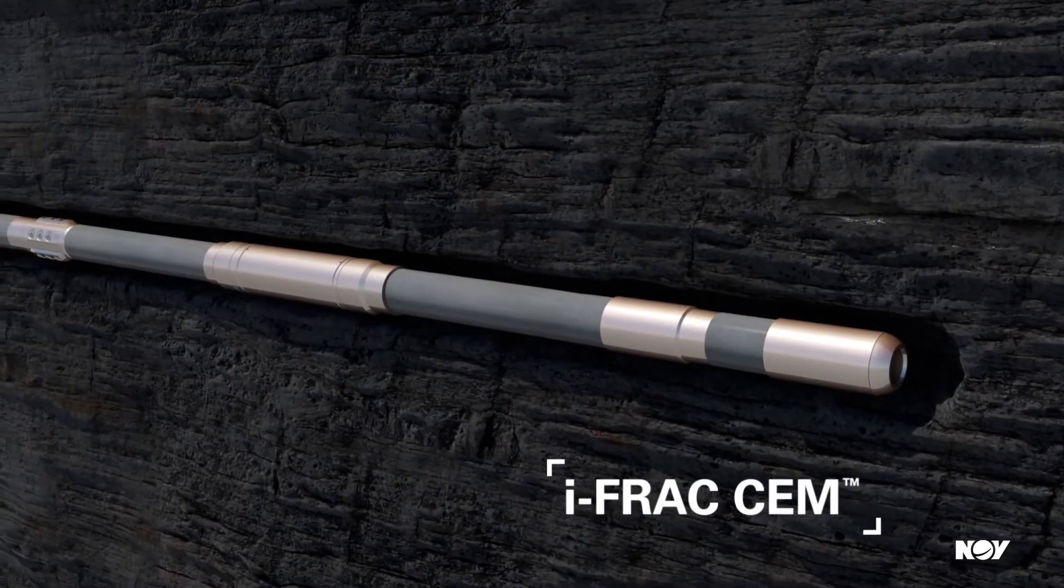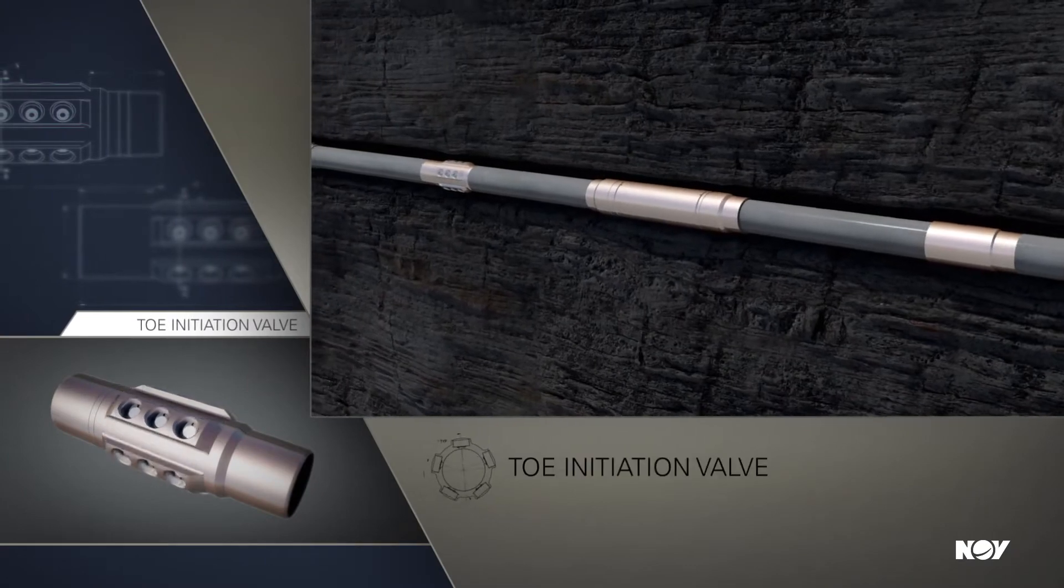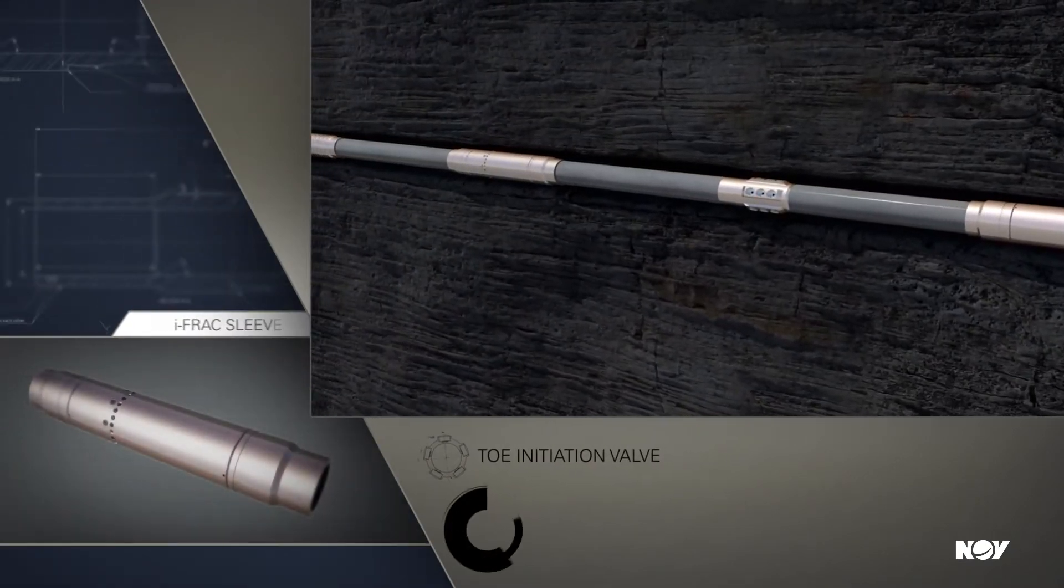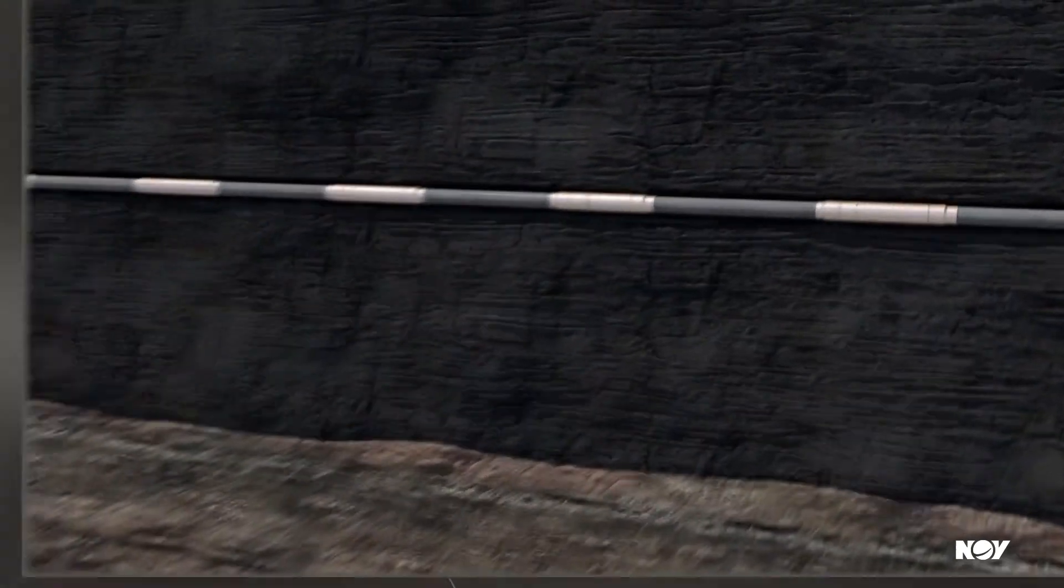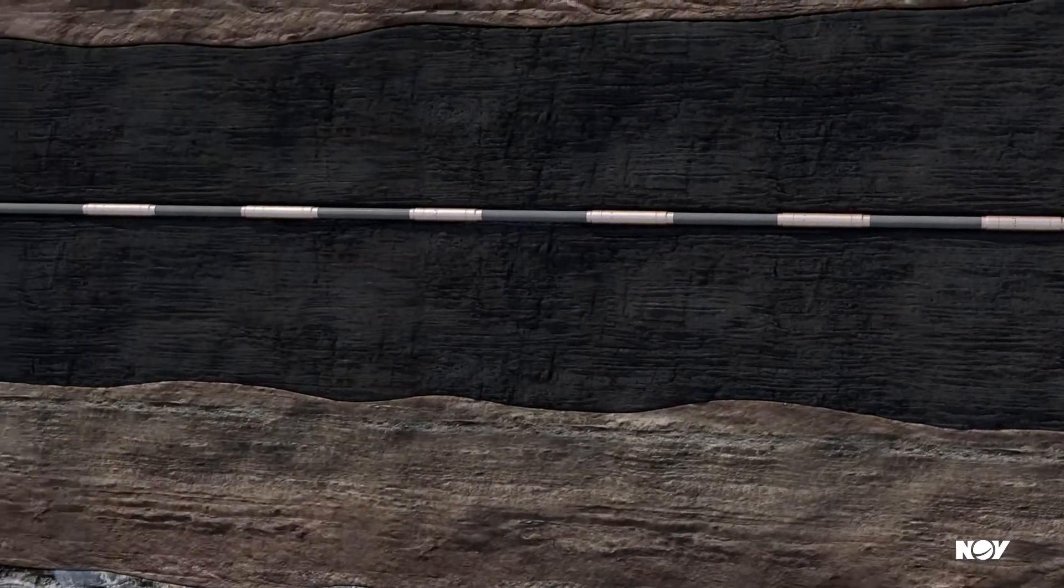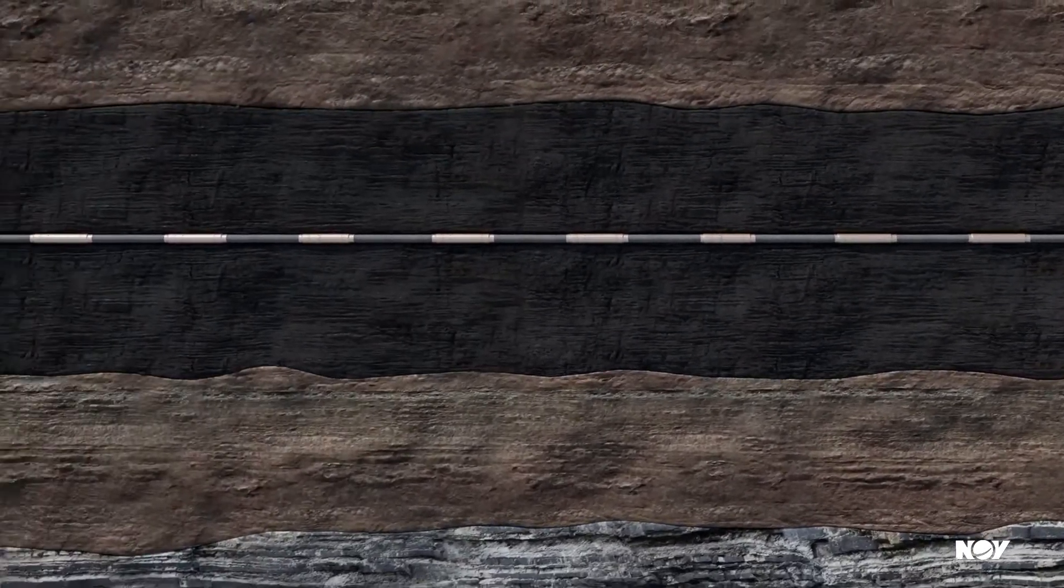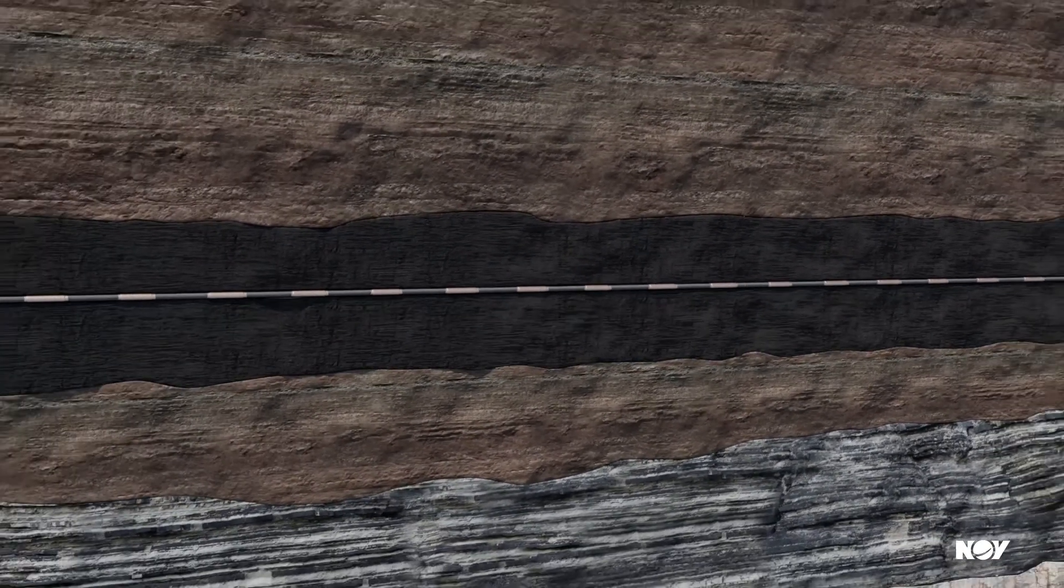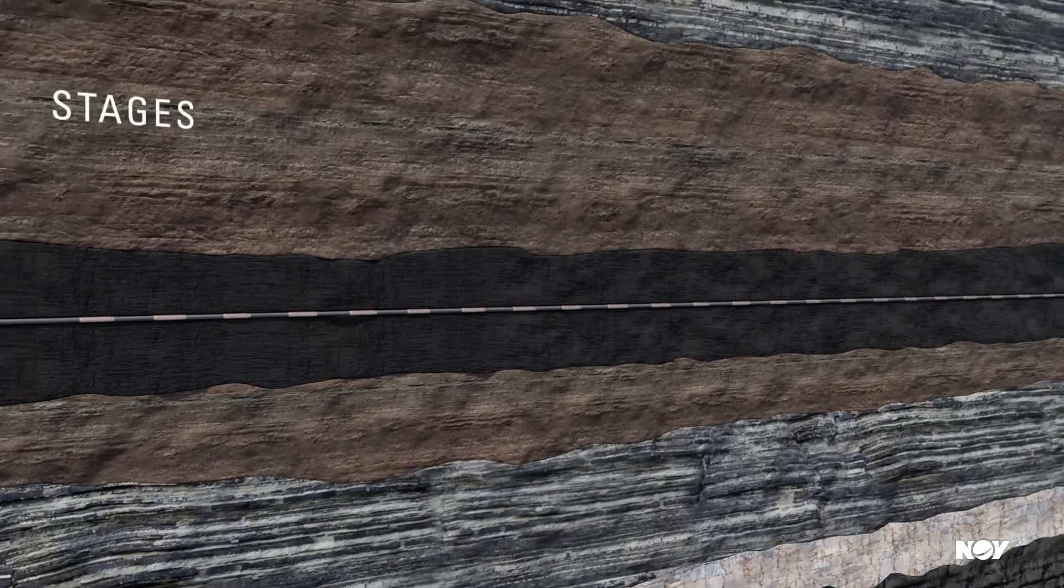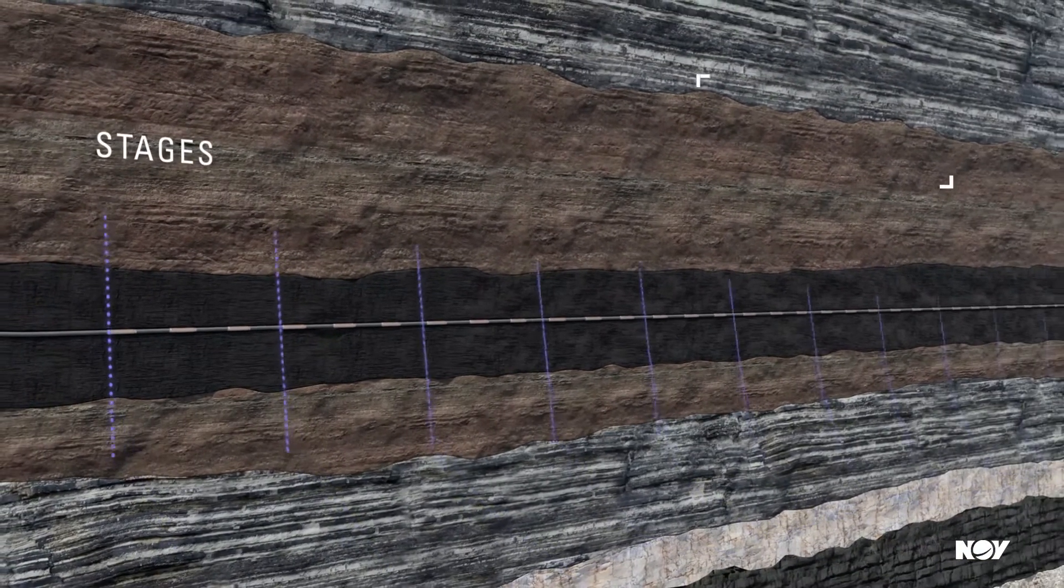The IFRAC cemented system consists of a toe initiation valve, ball-activated IFRAC sleeves, and a liner top if required. All components are run in hole as an integrated part of the reservoir completion string. The system can isolate multiple stages, each containing between 1 and 20 IFRAC sleeves.